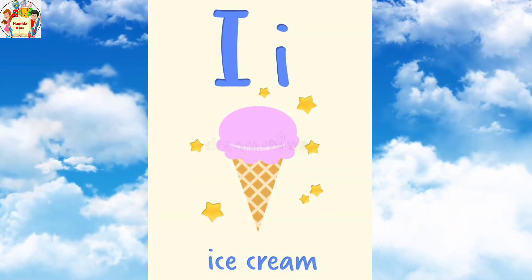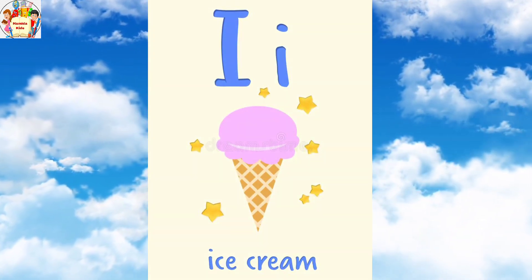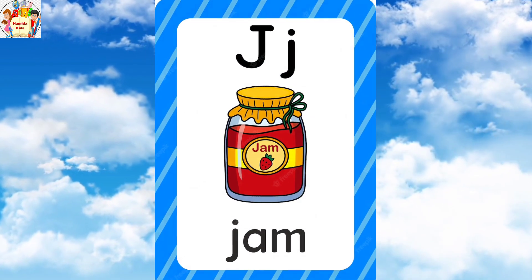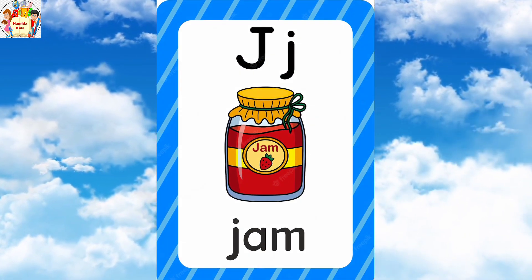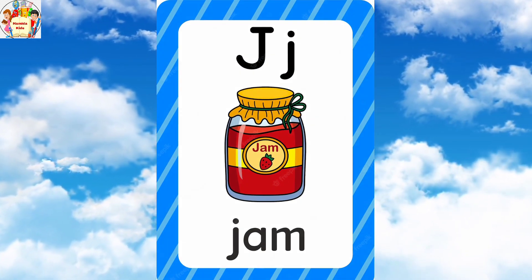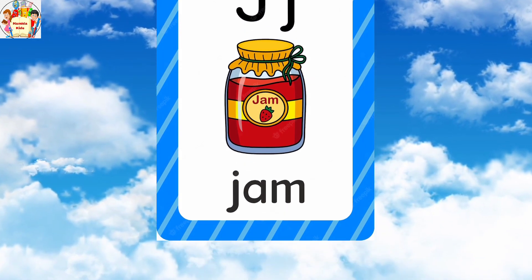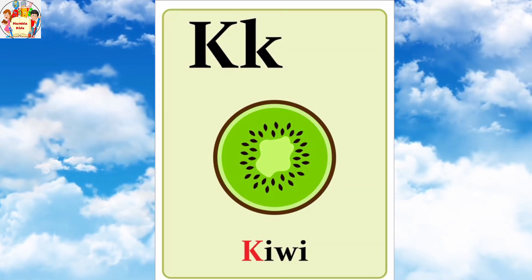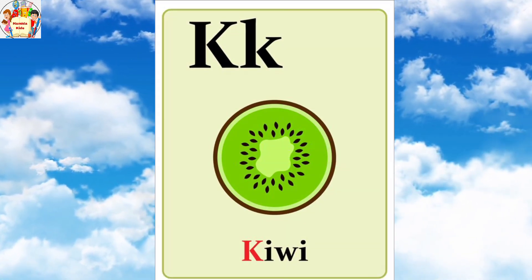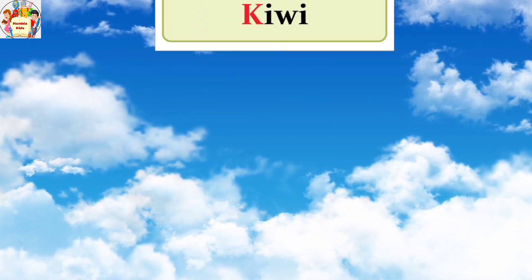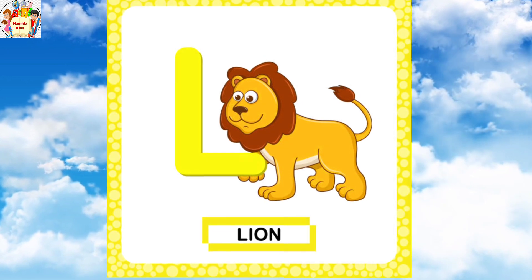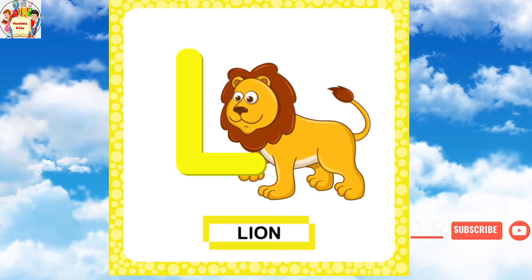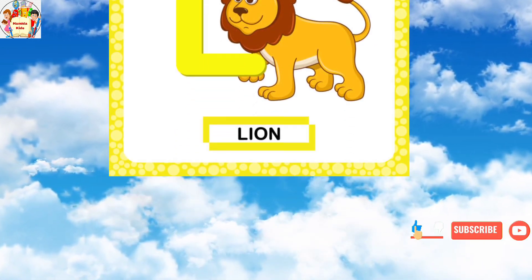I for ice cream. J for jam. K for kiwi. L for lion.